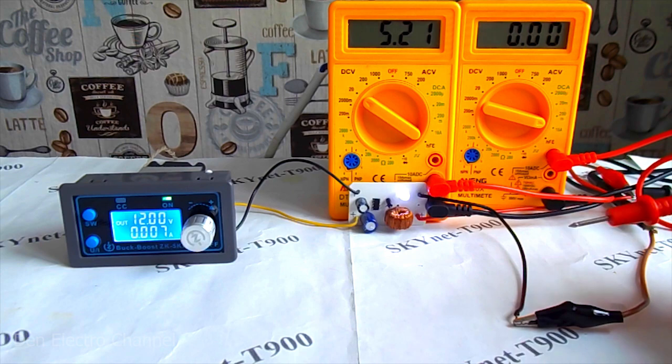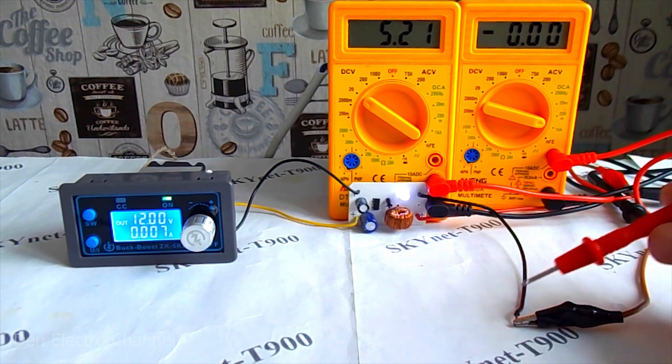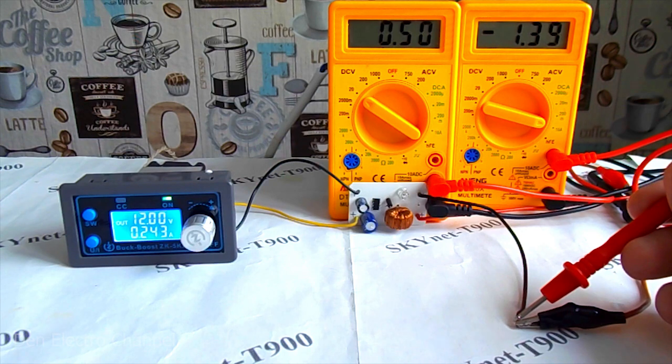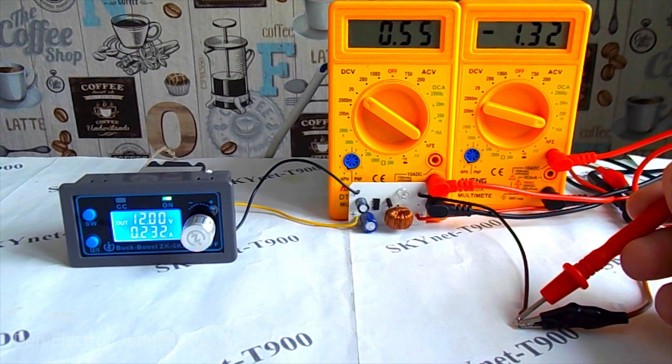And now I'll see how the converter behaves during a short circuit. The light bulb goes out. The voltage drops to half a volt and the current sags to 1.3 amperes.